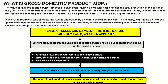GDP shows how big the economy is. In India, the mammoth task of measuring GDP is undertaken by a central government ministry. This ministry, with the help of various government departments of all Indian states and union territories, collects information relating to the total volume of goods and services and their prices, and then estimates the GDP. This flowchart briefly explains how the value of goods and services in these three sectors are calculated and then added up.